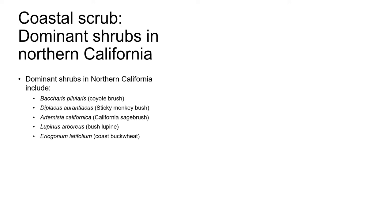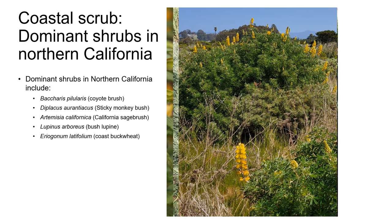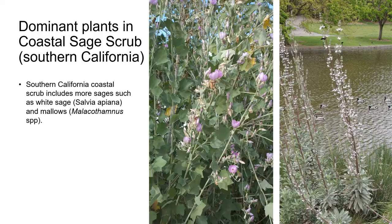Common shrubs in Northern California Coastal Scrub include Coyote Brush, Deer Weed, Sticky Monkey Bush, California Sagebrush, Bush Lupin, and Coast Buckwheat.